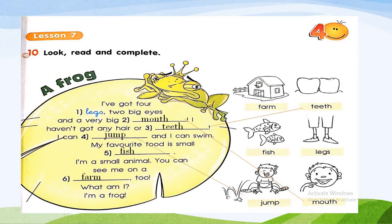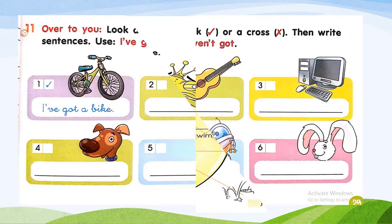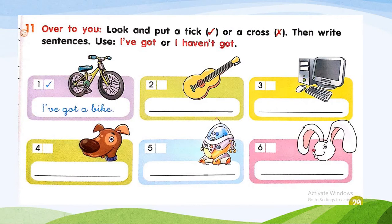Let's go to exercise 11: over to you — look and put a tick or cross, then write sentences using 'I have got' or 'I haven't got'. Cross to the guitar, tick to computer, tick to the dog, cross to the robot, and tick to the rabbit.